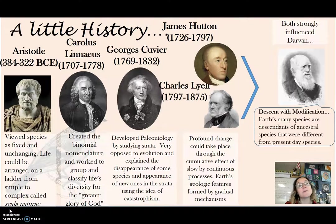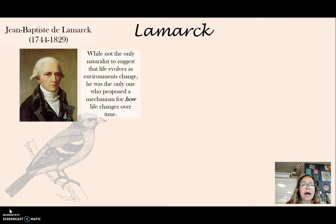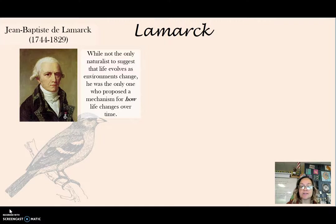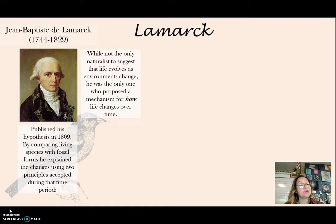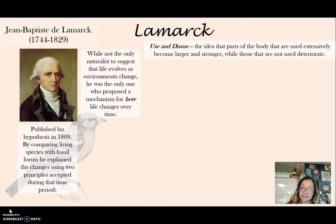Darwin eventually came up with his hypothesis of natural selection, or descent with modification. Before Darwin, there was a gentleman named Lamarck. While he wasn't the first to suggest that life evolves on Earth, he was one of the first to propose how life on Earth could change over time. He published his hypothesis in 1809 — coincidentally the year Darwin was born. He studied the fossil record, and his conclusions were based on two principles. The first: use and disuse — the idea that body parts used extensively become larger and stronger, while those not used deteriorate.